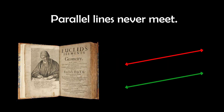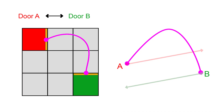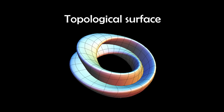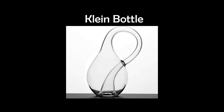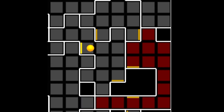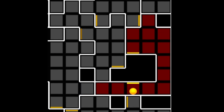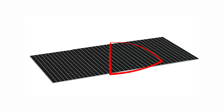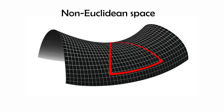Euclid's parallel lines can never meet. We break that by giving certain doorways identity maps that glue two distant edges together. Globally, you teleport across the surface. Geodesic trails form loops that can't exist on a flat plane — proof you're in non-Euclidean space.